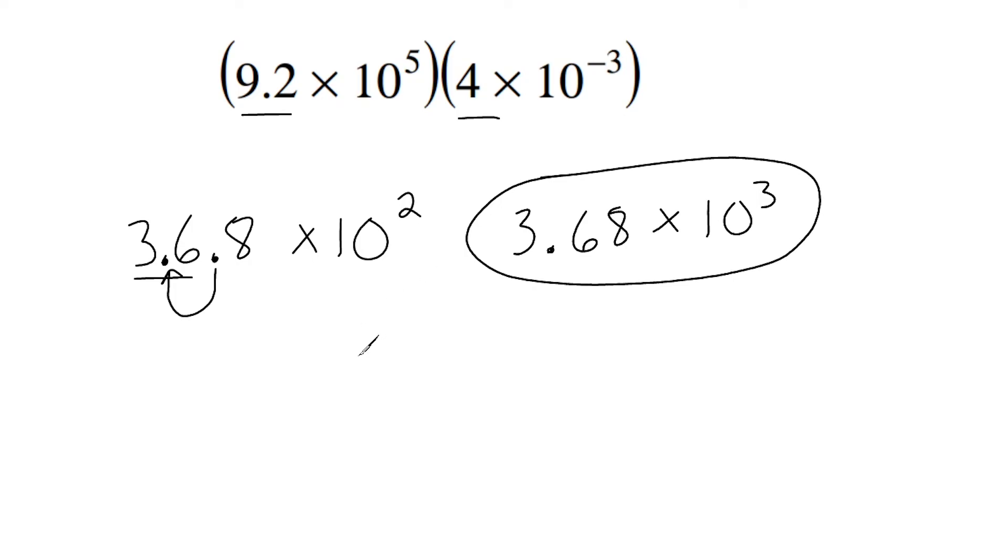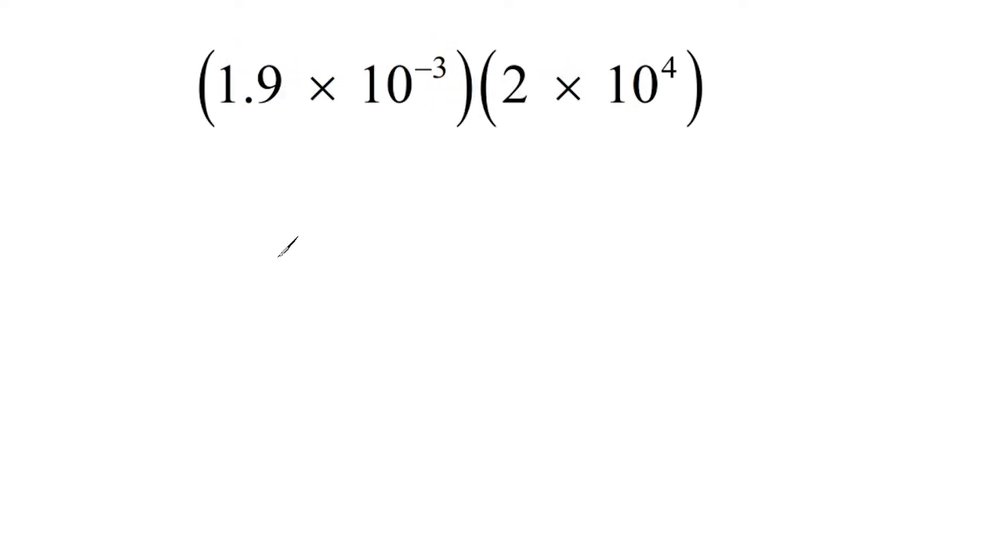All right, let's go ahead and do one more example. All right, so we're going to go ahead and multiply 1.9 by 2. So basically, we are just doubling 1.9 and that would give us 3.8. And then we are going to bring down our base of 10 and add the exponents of those bases. So negative 3 plus 4 is positive 1.